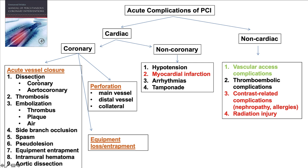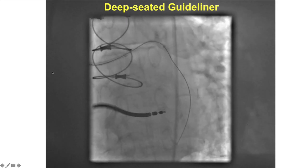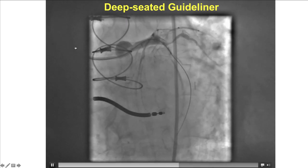Aortocoronary dissections are a subtype of coronary dissections, which in turn are one of the causes of acute vessel closures that might lead to hypotension, myocardial infarction, and arrhythmias. These are some examples.